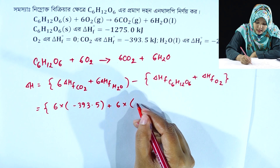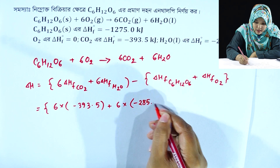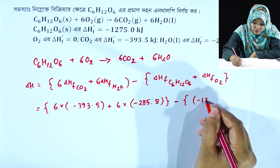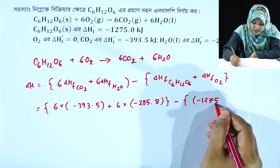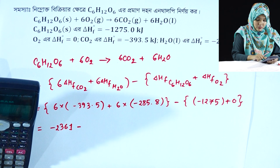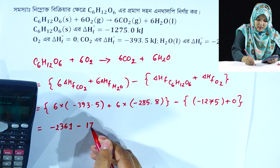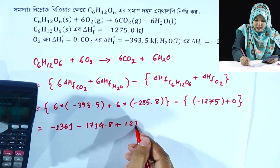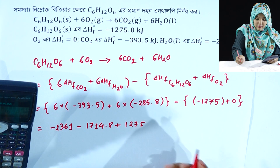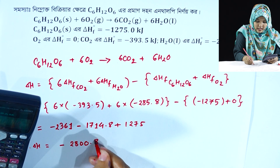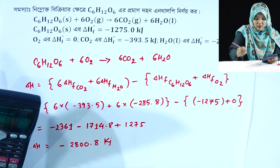...minus 285.8, and glucose is minus 1275, plus 6 into 285.8, which is 1714.8, plus 1275. Therefore, ΔH is equal to minus 2808 kilojoule per mole.